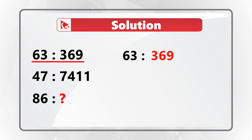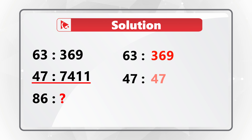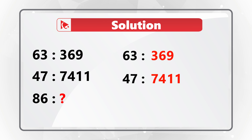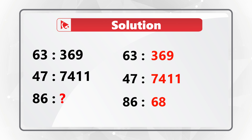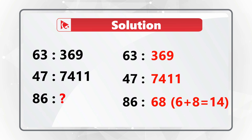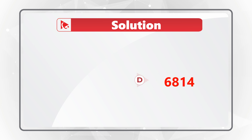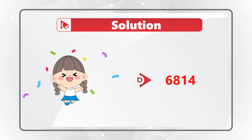The second ratio works similarly: 47 relates to 74 where digits are swapped, concatenated with the sum of 7 and 4 which is 11. So for 86, we swap 6 and 8, then add 8 + 6 = 14. The correct answer is Choice D: 6814.